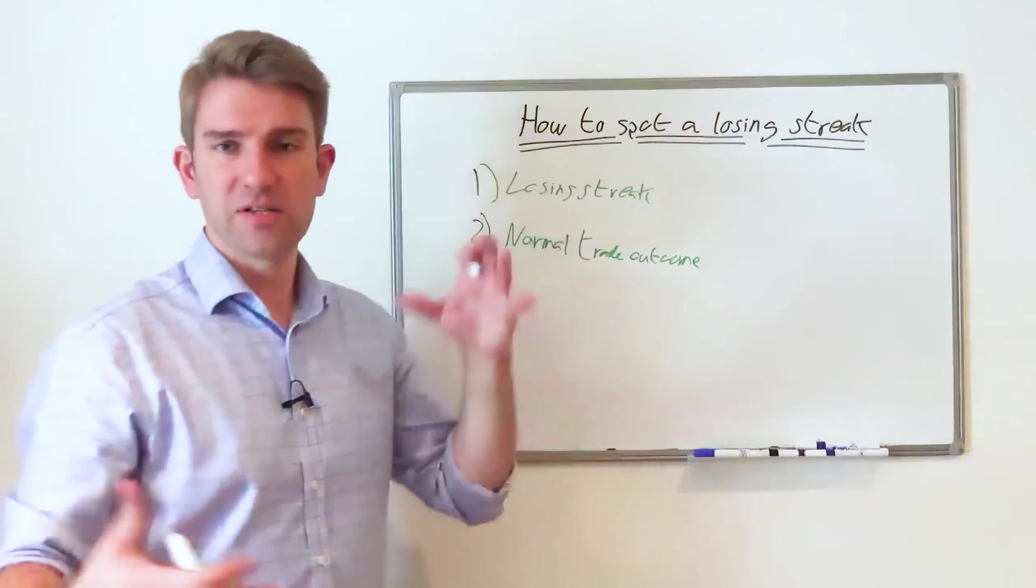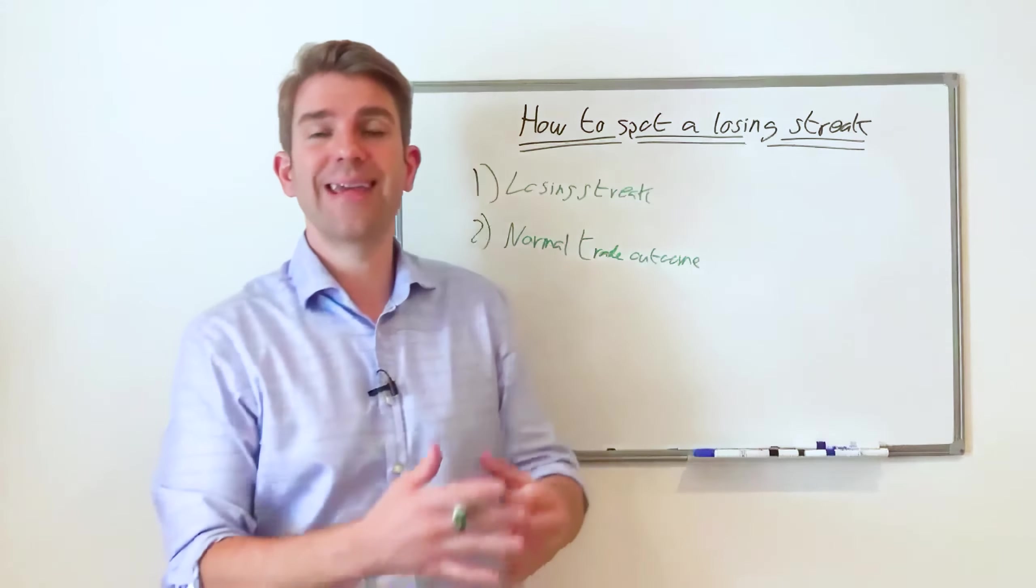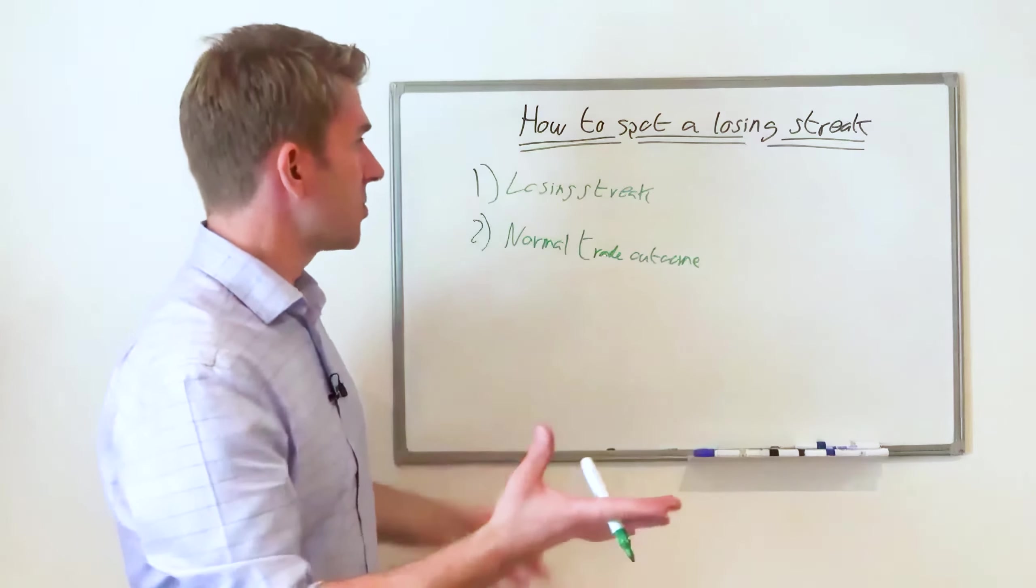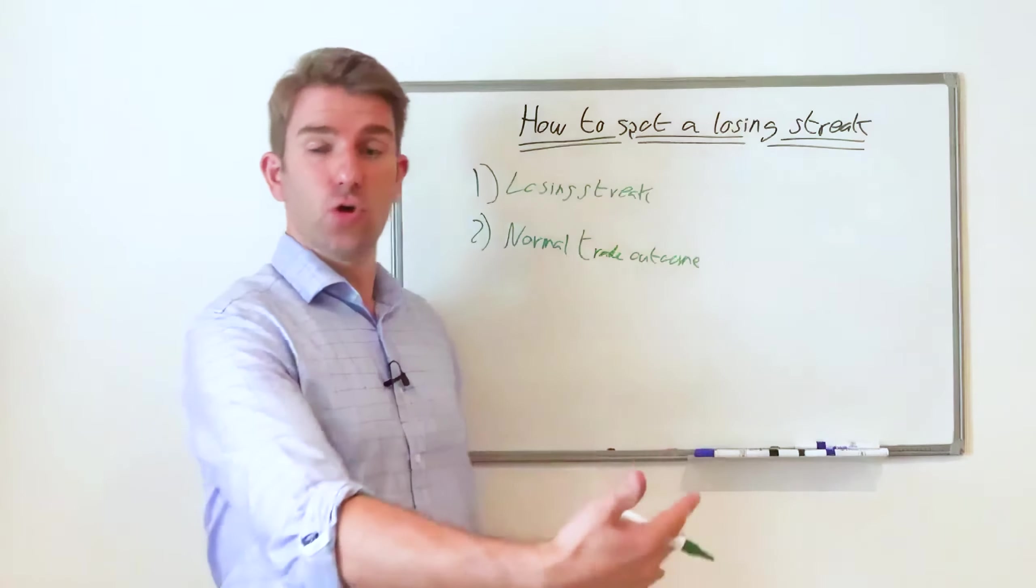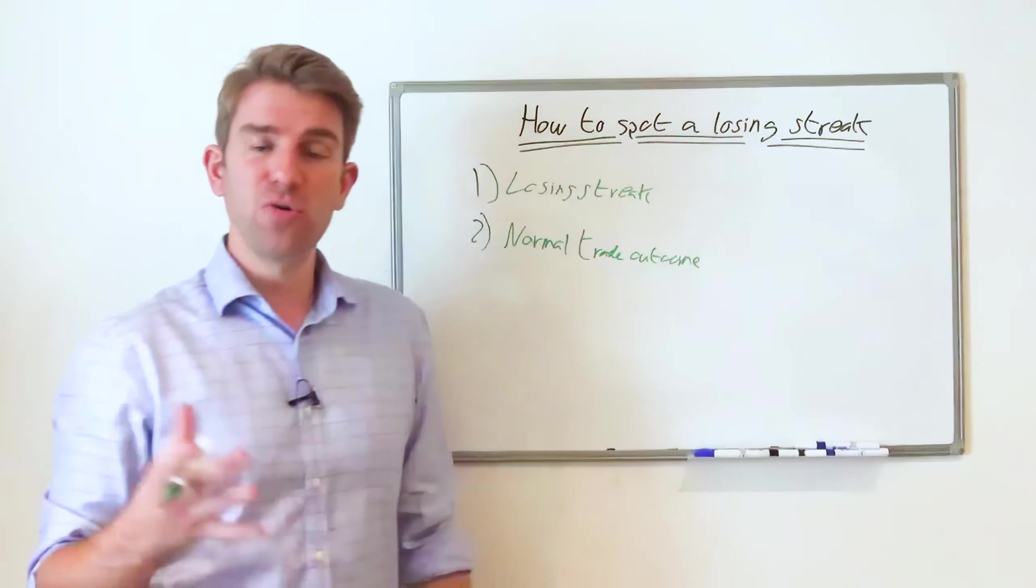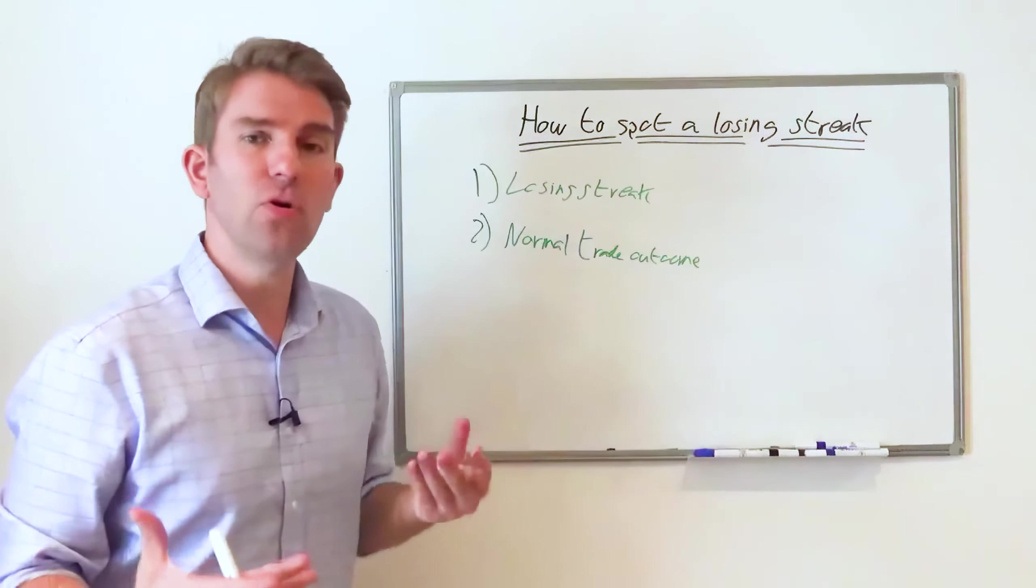No, there's a distinct difference between: is it generally a losing streak that needs to be stopped - as in, your strategy is not working anymore and if you carry on down this path you're going to undo everything you've done - or is it number two, just a normal trade outcome?